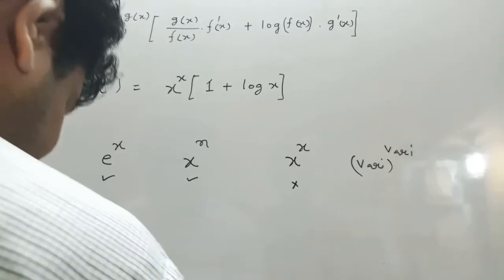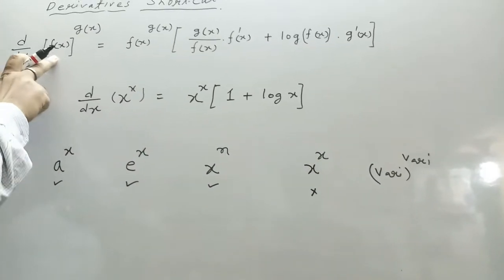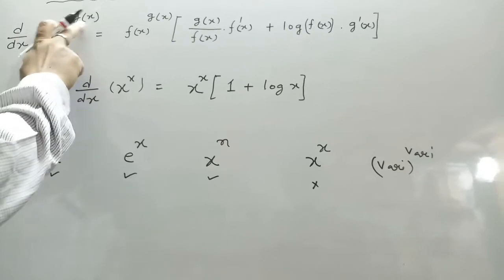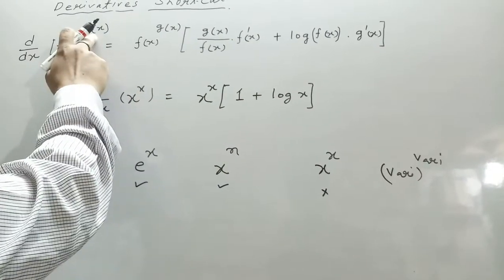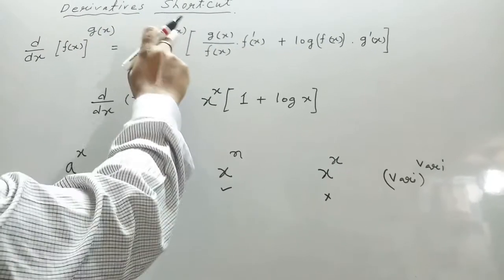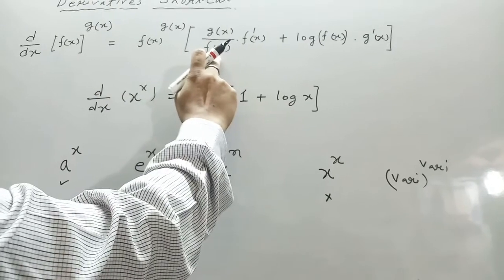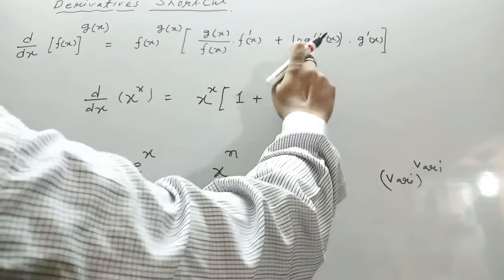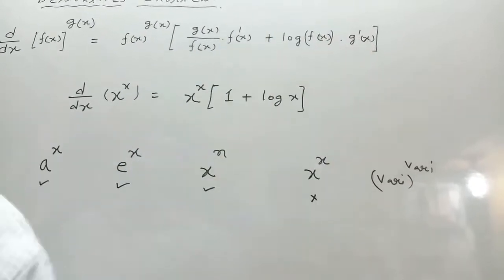The shortcut formula is: the derivative of f(x) to the power g(x), when both are variable, equals the function f(x)^g(x) as it is, multiplied by g(x) divided by f(x) times f'(x), plus log of f(x) multiplied by the derivative of g(x).